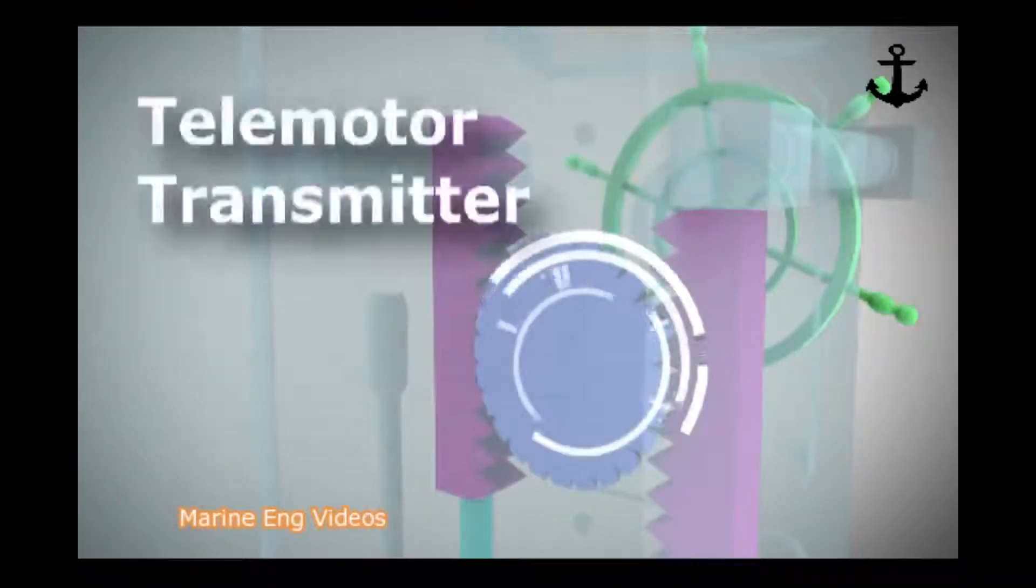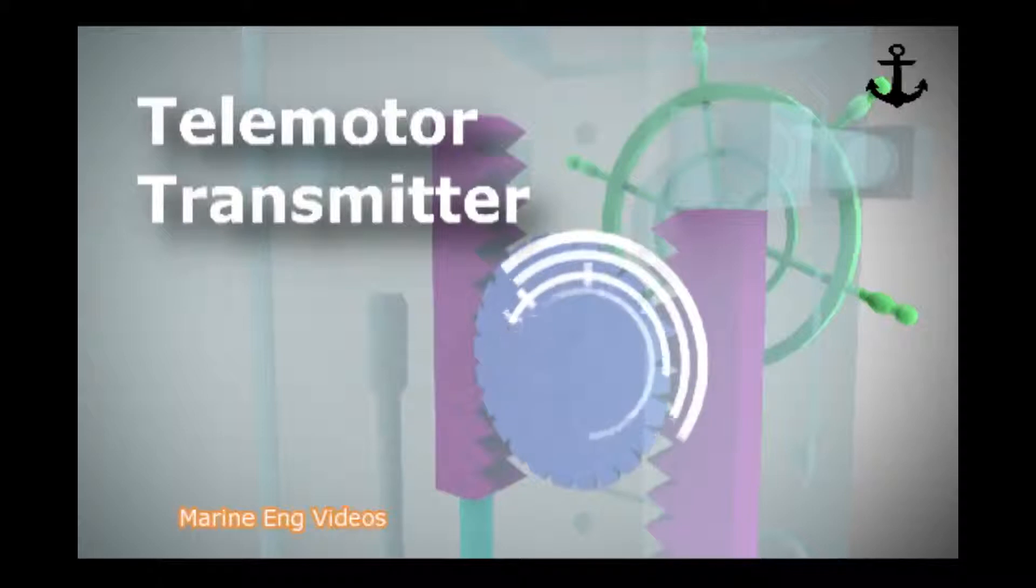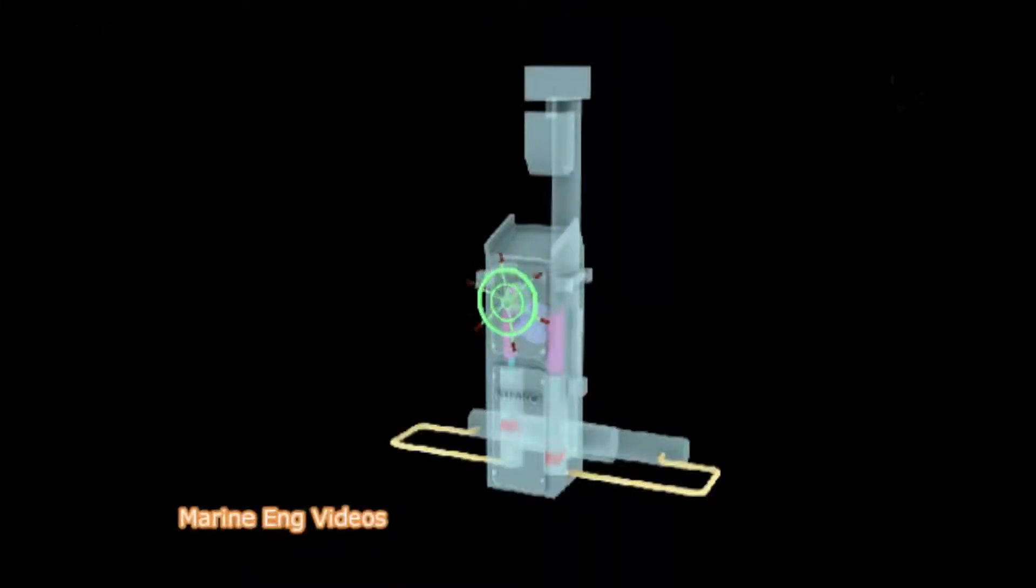Telemotor System. The telemotor system is a system which transmits a mechanical order by turning the steering wheel to a distant system called the actuating system, which in turn works to turn the rudder by a corresponding angle. The telemotor system comprises of transmitter and receiver.